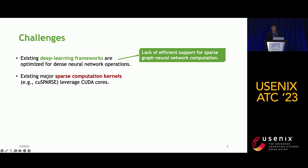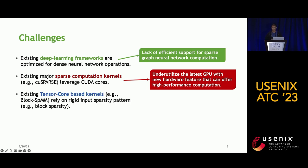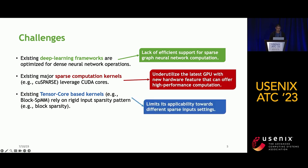Existing sparse libraries dedicated by vendors like NVIDIA, such as cuSPARSE, can only leverage CUDA cores for acceleration, underutilizing GPUs that have tensor cores. Furthermore, existing tensor core-tailored kernels, like block sparse kernels, are only focused on rigid sparse patterns, such as 2:4 sparsity, limiting applicability to more general settings.